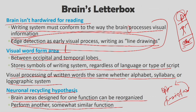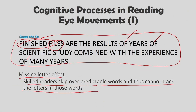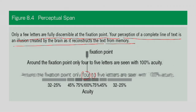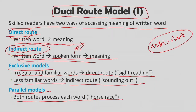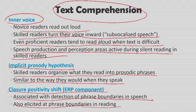We looked at how brain systems are piggybacked to help us with reading and writing — how the visual word form area perceives written symbols, extracts meaning, and the idea of neuronal recycling hypothesis. We examined cognitive processes in reading: the missing letter effect, eye movements, perceptual span, fixation duration as a predictor of reading ability, and the dual route model of reading. Lastly, we looked at text comprehension and how the implicit prosodic hypothesis explains how we comprehend text.